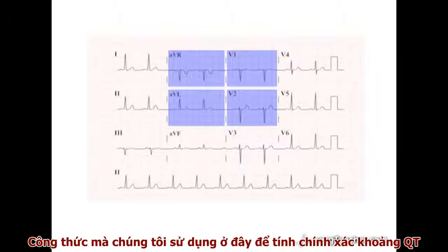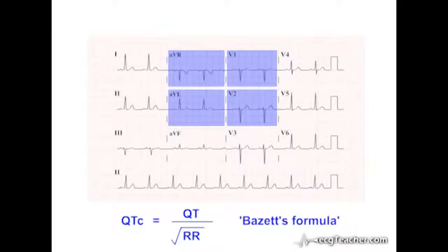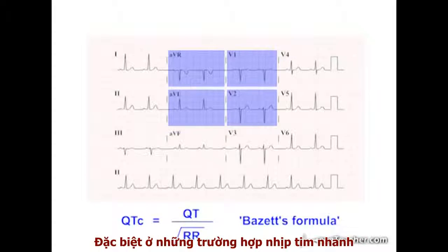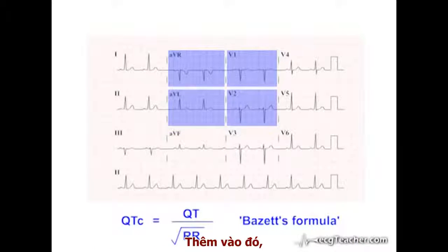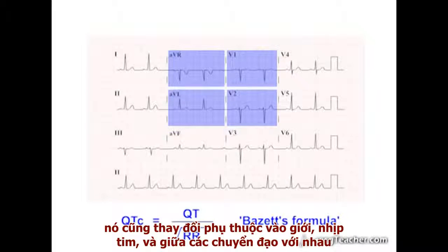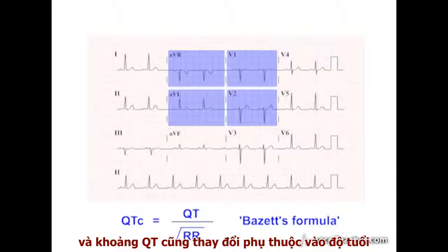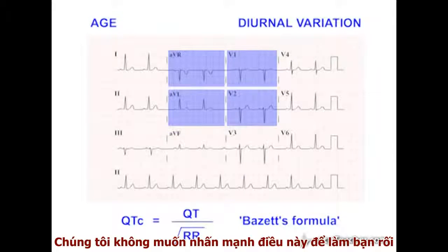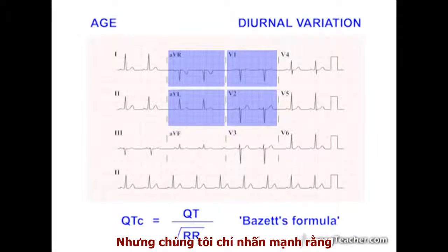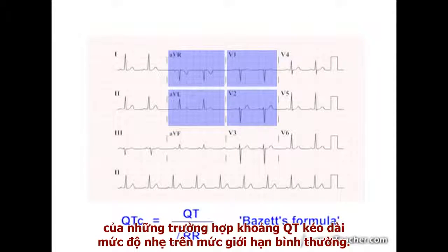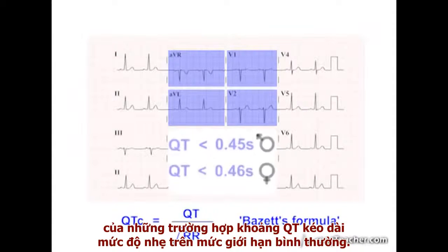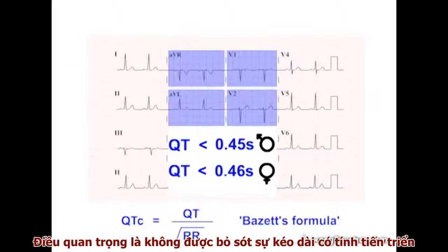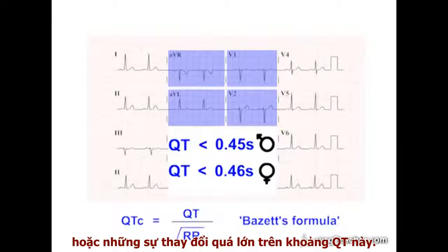The equation used to calculate the corrected QT was developed from empirical observations on male volunteers in the 1920s. While useful, it does not yield perfect results, particularly at high heart rates. In addition, as well as varying with gender, heart rate, and between leads, the QT interval also varies with age and even with the time of day. We raise these issues not to confuse, but to emphasise that it is difficult to assess the clinical significance of minor levels of QT prolongation. The key is not to miss gross prolongation or major changes in the interval.